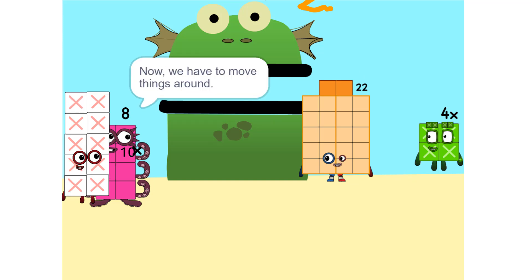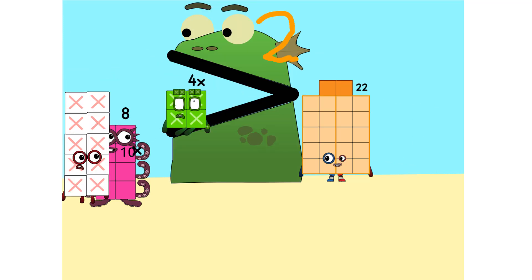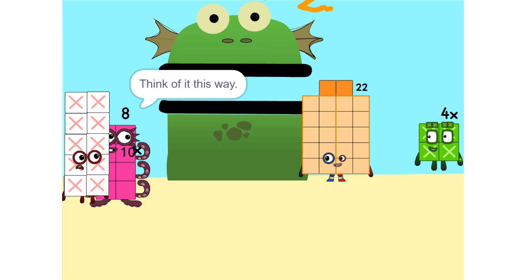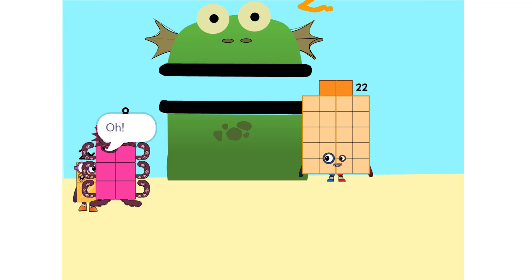Now we have to move things around. We have to move this 4x to this side. So, if it's positive, it becomes negative and vice versa. Why? Think of it this way. You're subtracting 4x from each side. Oh.